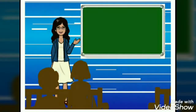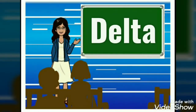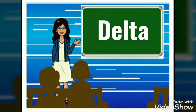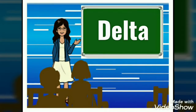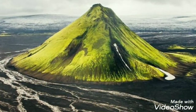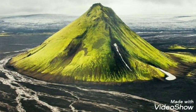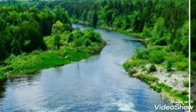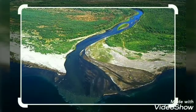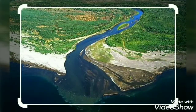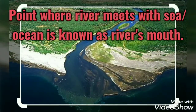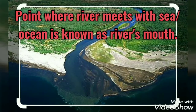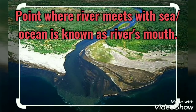The last one is delta. Let us see how it is formed. As I told you in the beginning, a river originates from highland and ultimately meets a large water body called the sea or ocean. The point where they meet is called the river's mouth.